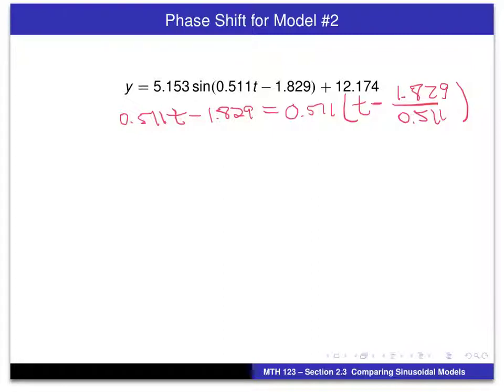But in this case, this more complicated form helps us determine the phase shift. And if we're unsure about this factorization, another way to look at this is start with the right-hand side. And you can see if I multiply the .511 times T, I get this. And if I multiply the .511 times this number, 1.829 divided by .511, I get this.